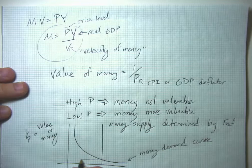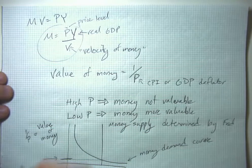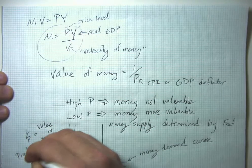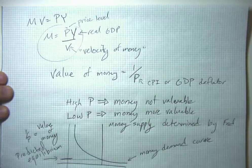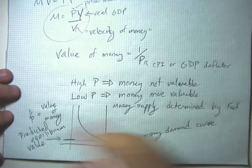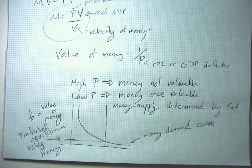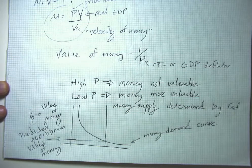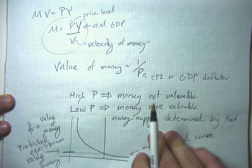And the intersection here is our predicted equilibrium value of money. And once we know our predicted equilibrium value of money, then we know what our predicted price level is. Let me go ahead and draw a bigger version and try to explain how we get to that equilibrium.